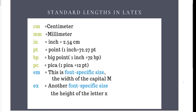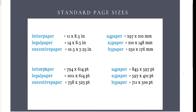There is also a unit BP (big point) which is exactly 1/72 of an inch, but normally we use PT which is slightly different. There is also PC (pica), which equals 12 points. You will also see in LaTeX the unit EM, which is the width of a capital M in the current font, and EX, which is the height of the letter X in the current font. These are font-specific size units.